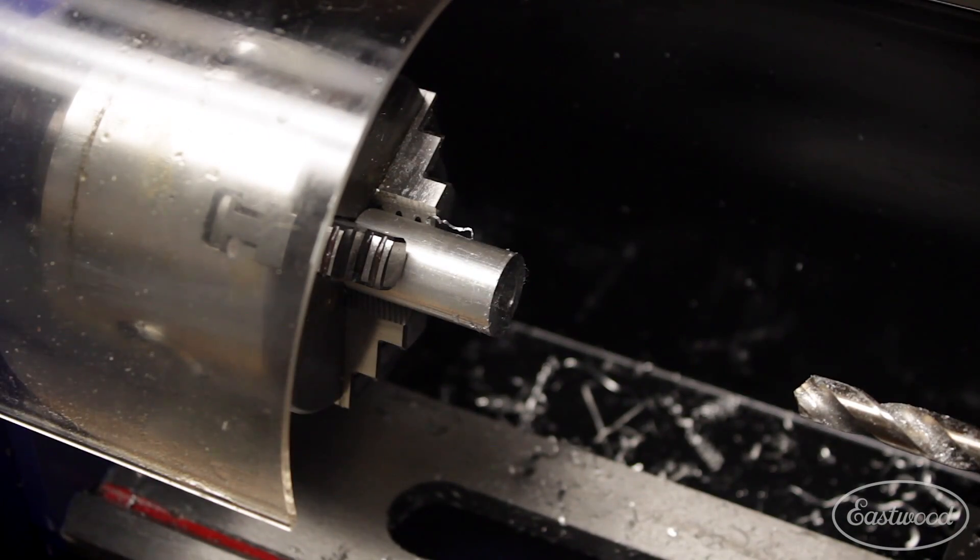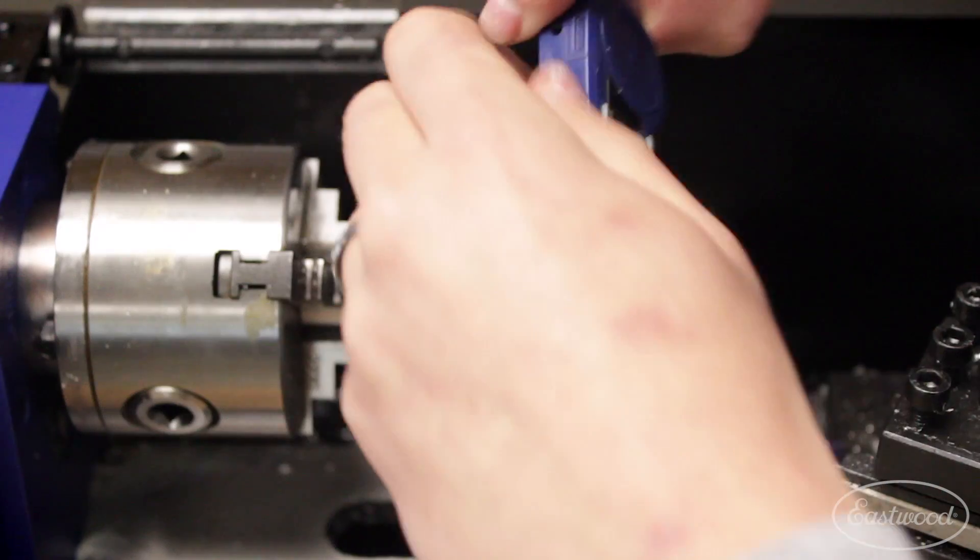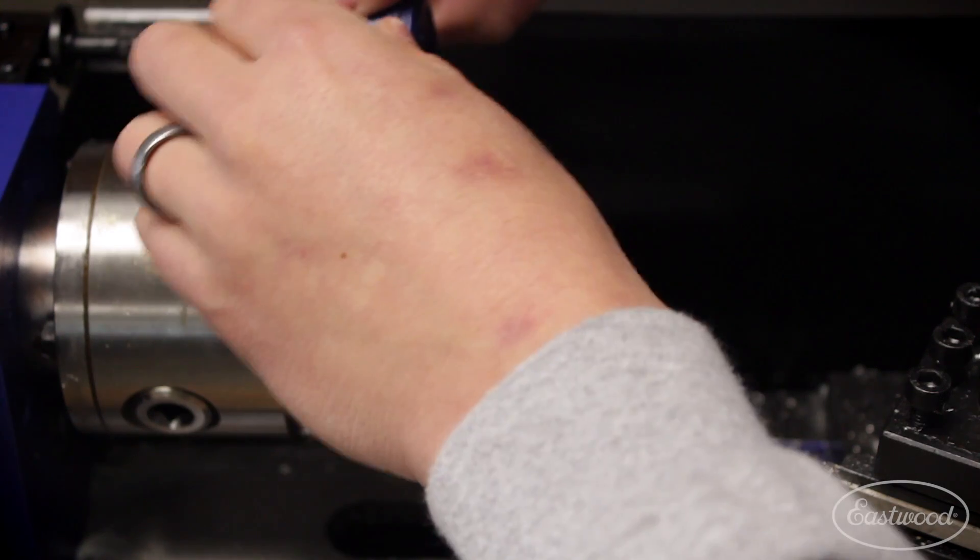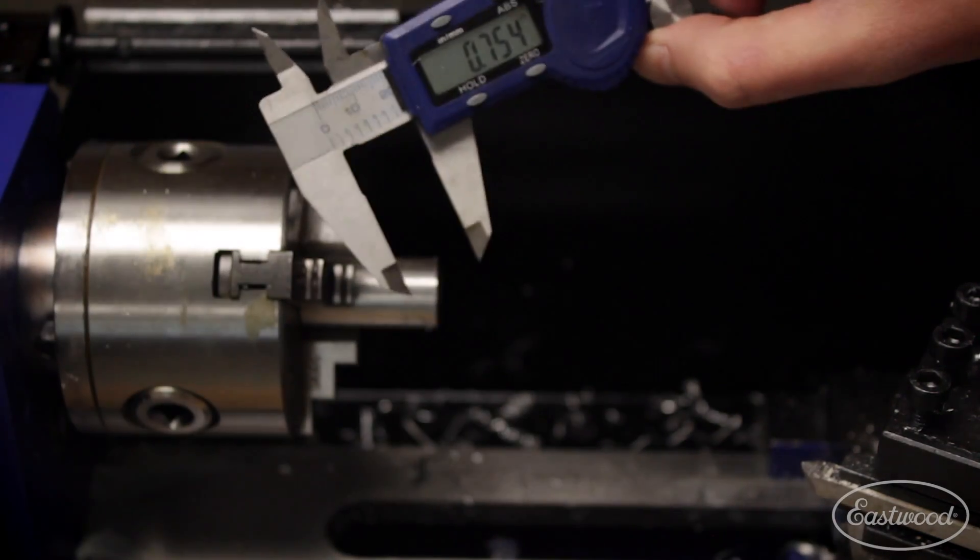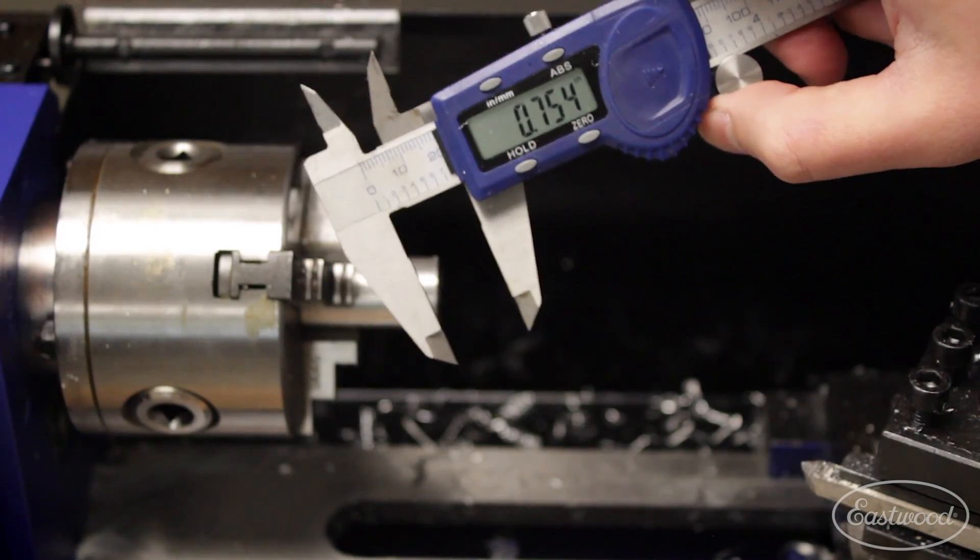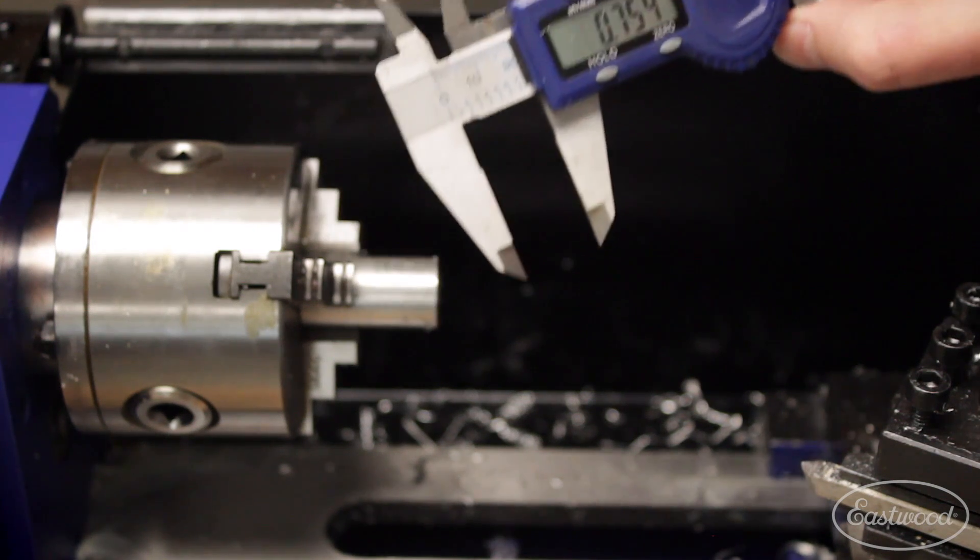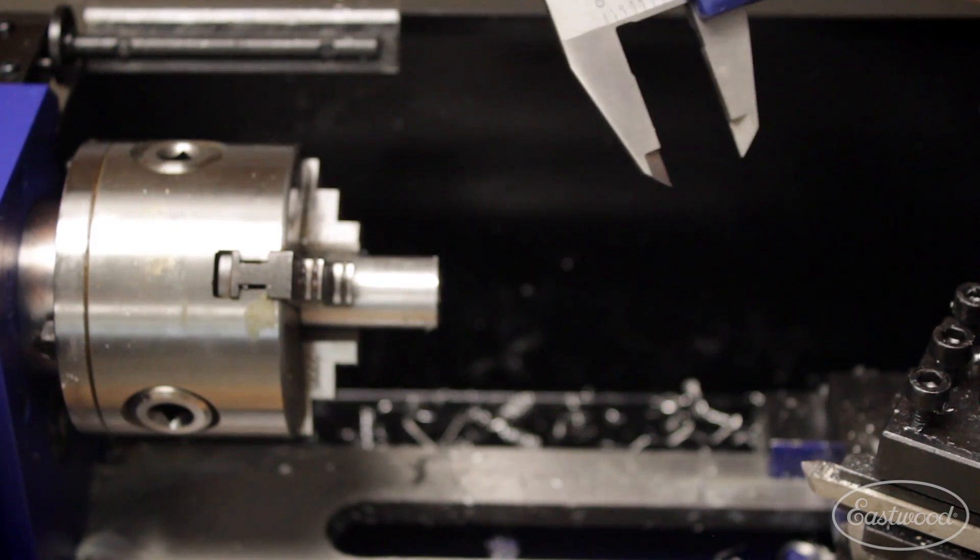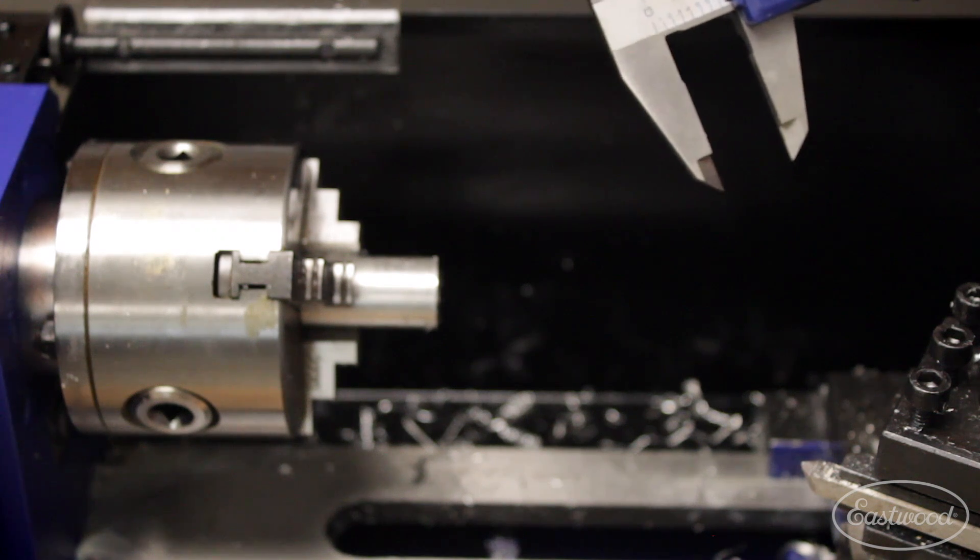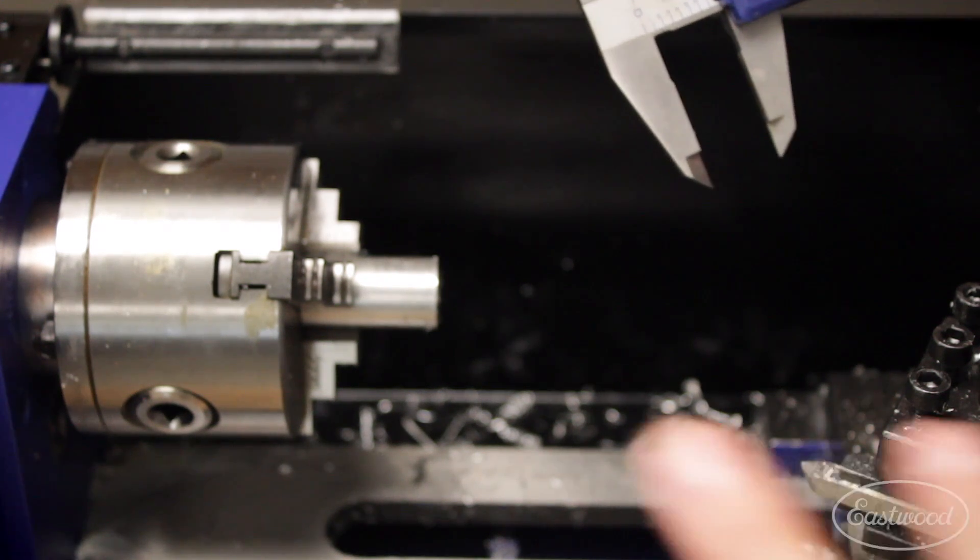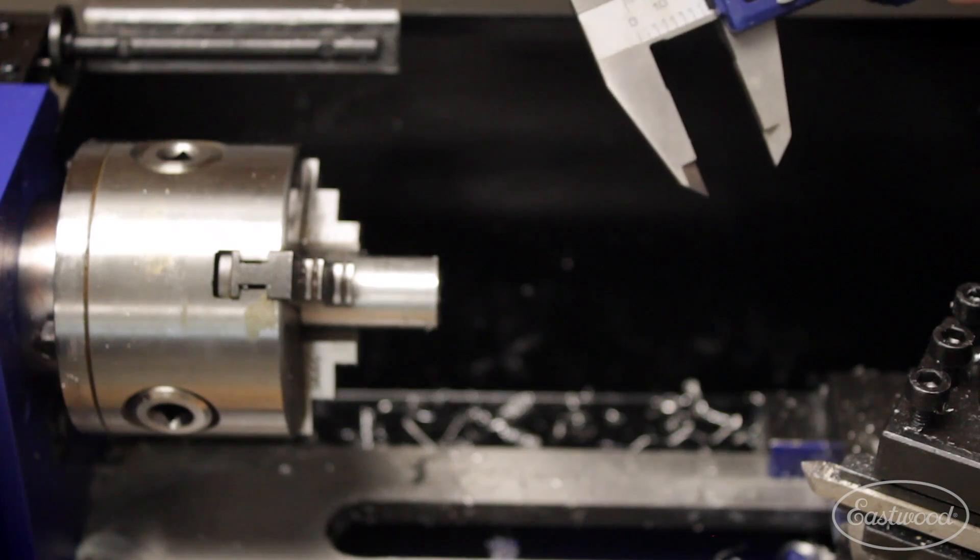All right, now that we've got that boring complete we're going to come back. We're going to get this thing to the right outer diameter and the right length. So knowing we've got about three quarters of an inch to work with, we're going to end up taking about 25 thousandths depth of cut. We're going to do that over two cuts. Try and get it as clean as possible and then we'll flip this part and cut the other side.